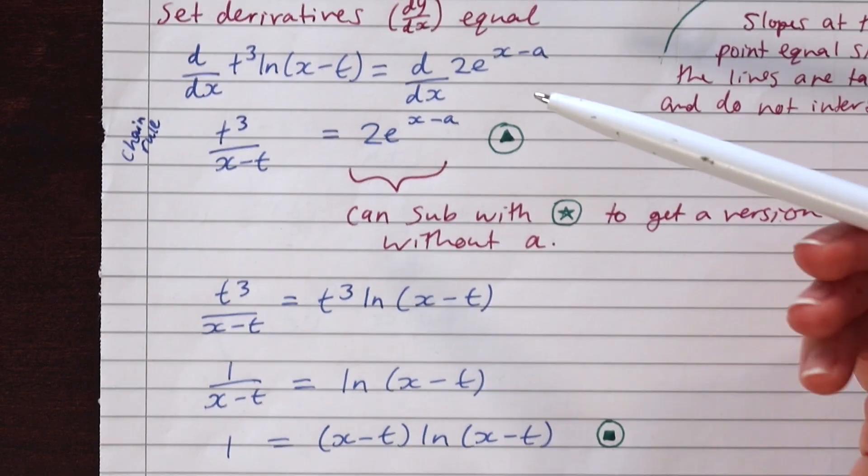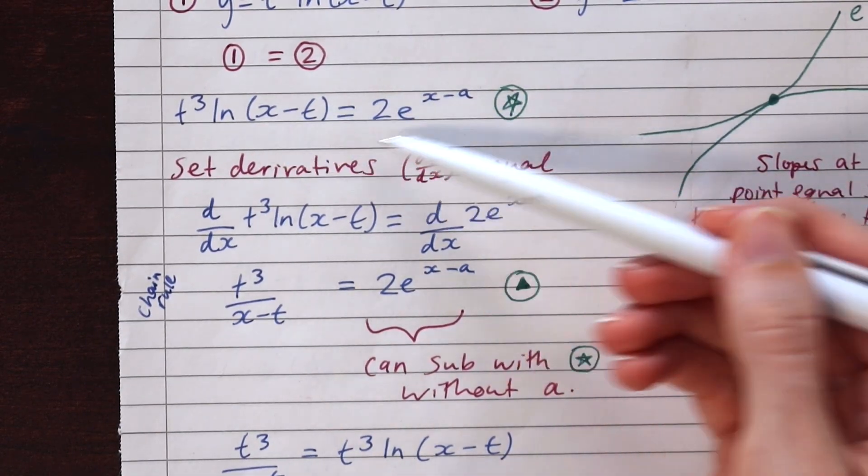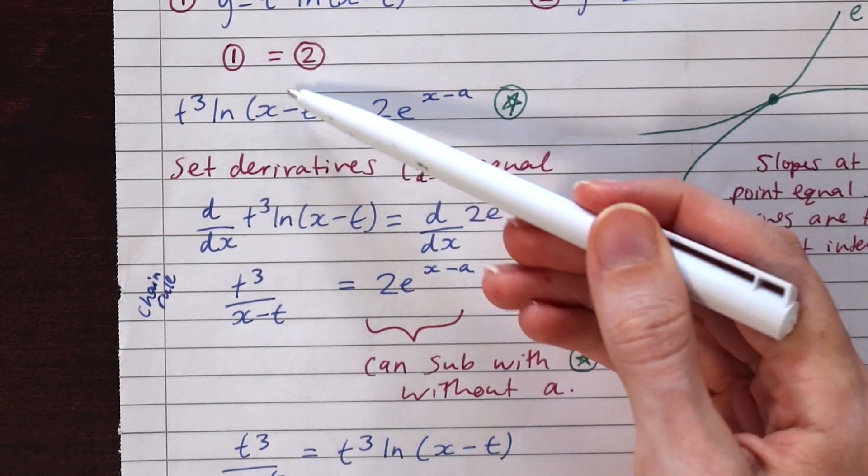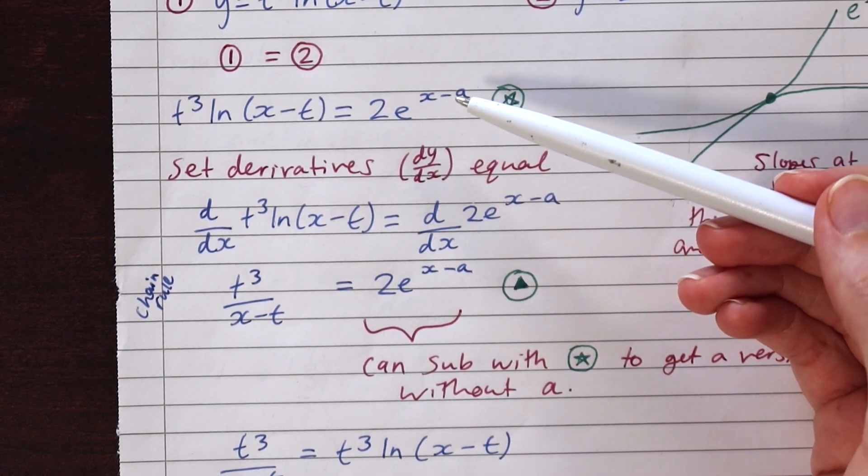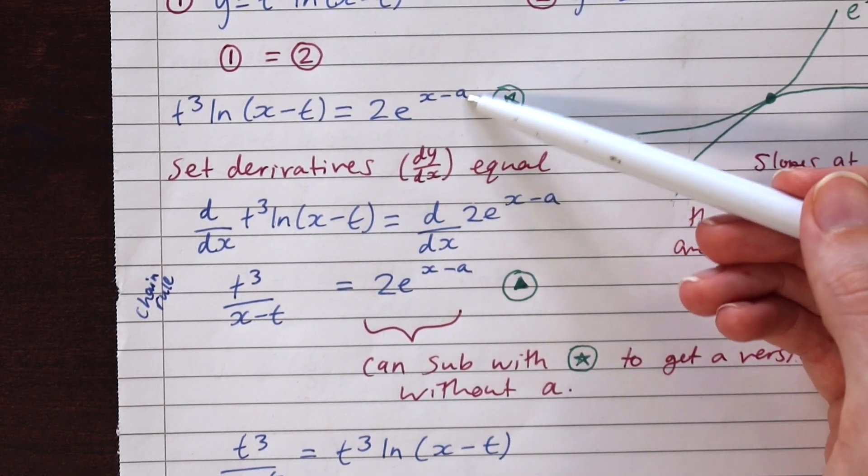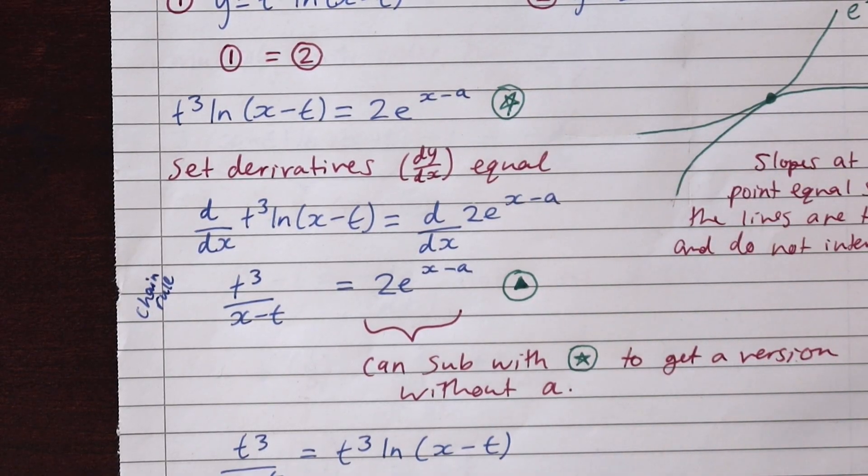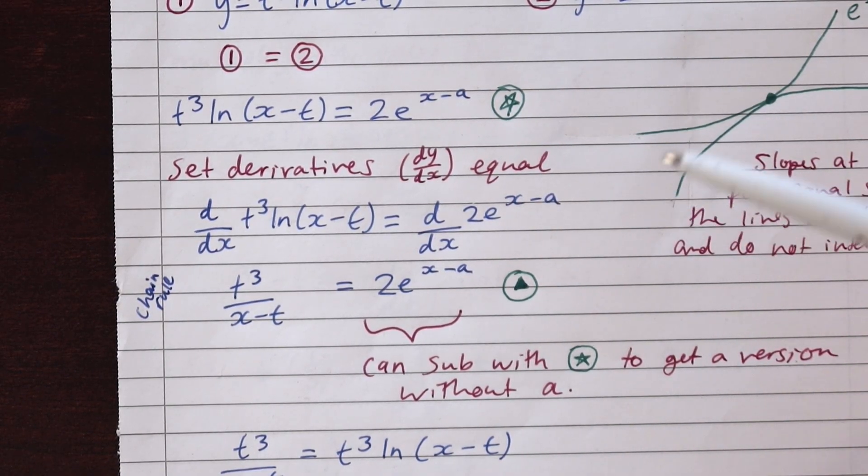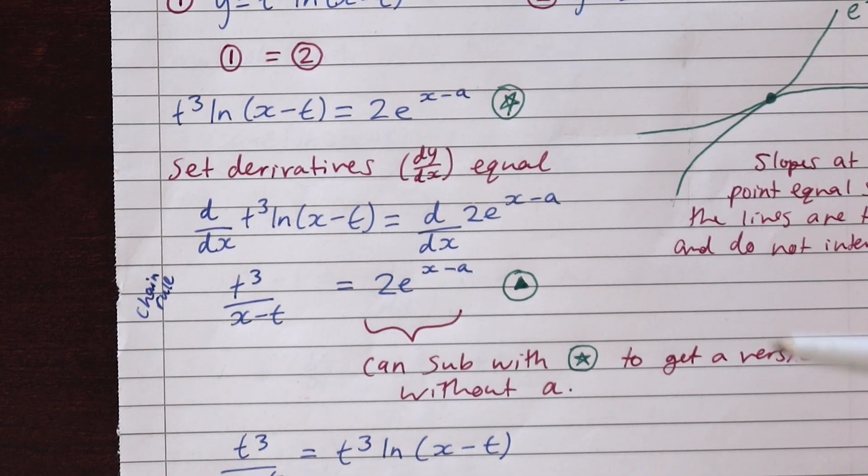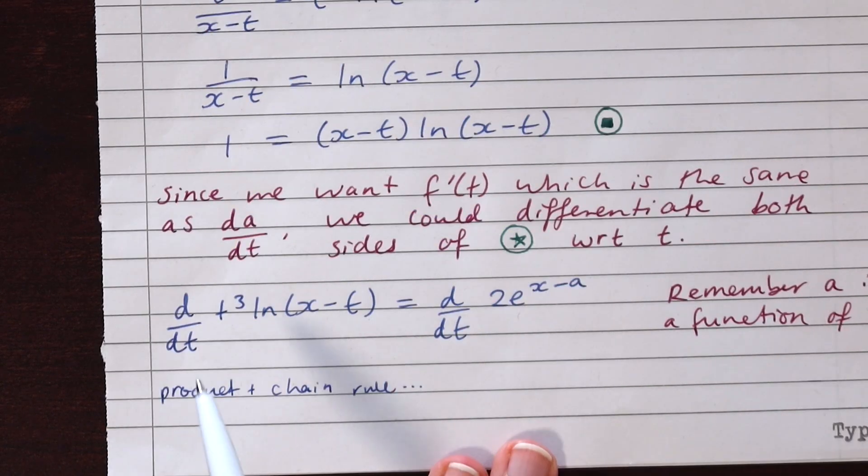And if we were to differentiate both sides of this with respect to t, this little a in here, due to implicit differentiation would give us a da/dt term. So that's how we can get it. I differentiate both sides of it with respect to t. Remembering that a is a function of t, a bit of product rule, a bit of chain rule. And you'll end up with this.